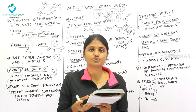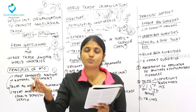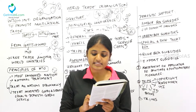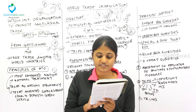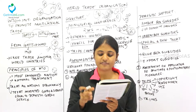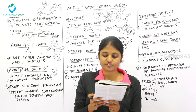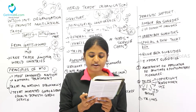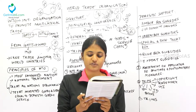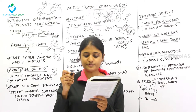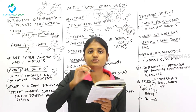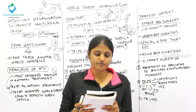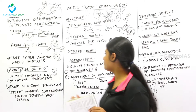The Council for Trade in Goods is called the Goods Council; it looks after the working of the GATT agreement. The Council for Trade in Services is the Services Council, overseeing implementation of GATS — the General Agreement on Trade in Services. The TRIPS Council handles issues related to Trade Related Aspects of Intellectual Property Rights, along with many other working committees inside the WTO.